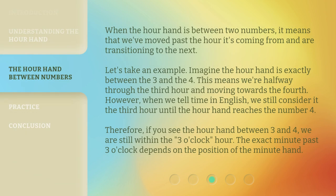When the hour hand is between two numbers, it means that we've moved past the hour it's coming from and are transitioning to the next. Let's take an example. Imagine the hour hand is exactly between the three and the four. This means we're halfway through the third hour and moving towards the fourth.